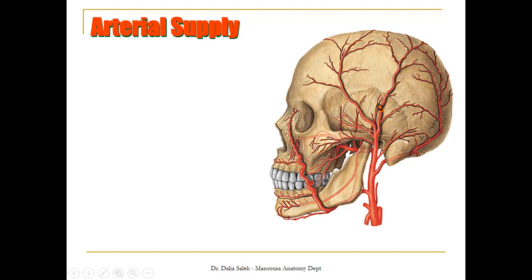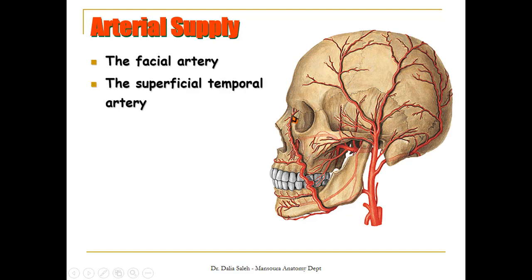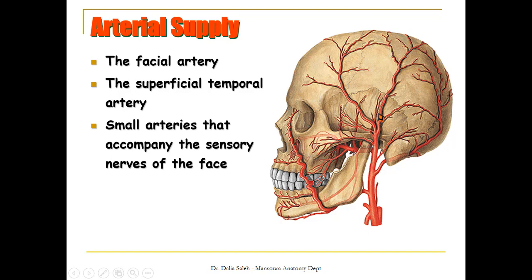The side of the skull has the superficial temporal artery, while the one that goes deep to the neck of the mandible is called the maxillary artery. The main artery that arises from the external carotid and supplies the face is the facial artery, which travels through the face and ends at the medial angle of the eye as the angular artery. We also have the superficial temporal artery and small arteries accompanying the sensory nerves of the face — the supratrochlear, supraorbital, external nasal, infraorbital, lacrimal, and so on.